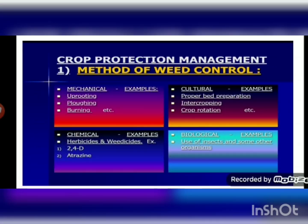Now we will see crop protection management. Even if we grow crops using good quality seeds and take care of the harvest, if protection of the crop is not done properly there are chances of destroying the crops. Methods of crop protection management include weed control. Weeds are unwanted plants which grow along with the actual crop and compete with the plants for sunlight and nutrients, reducing the growth of the actual crop.